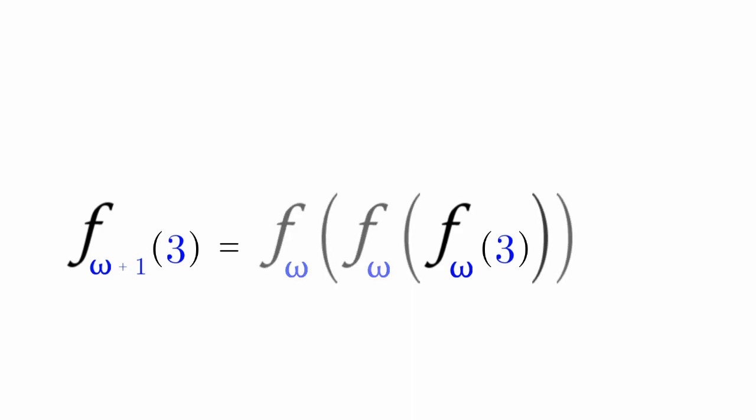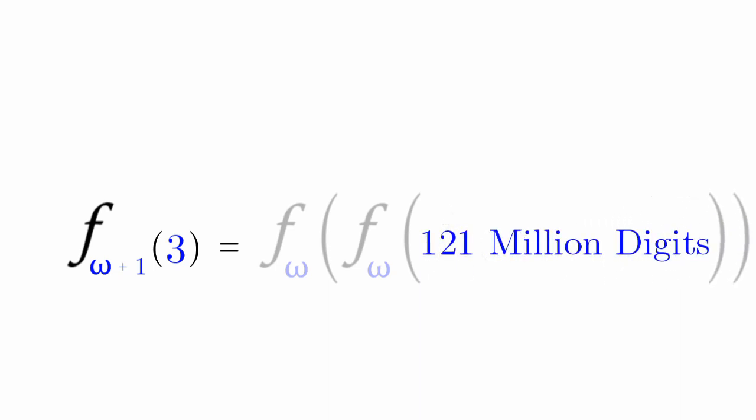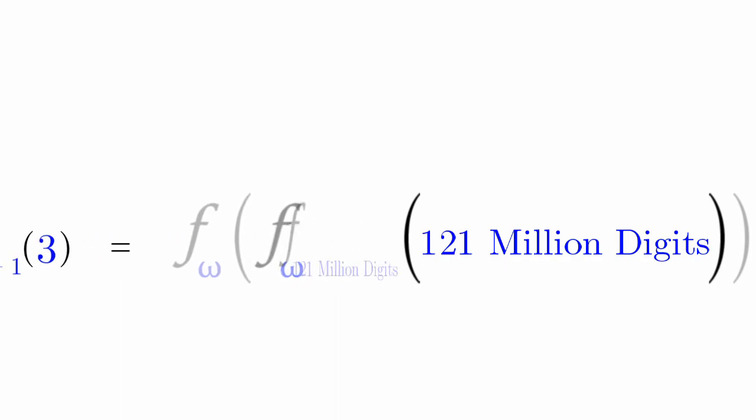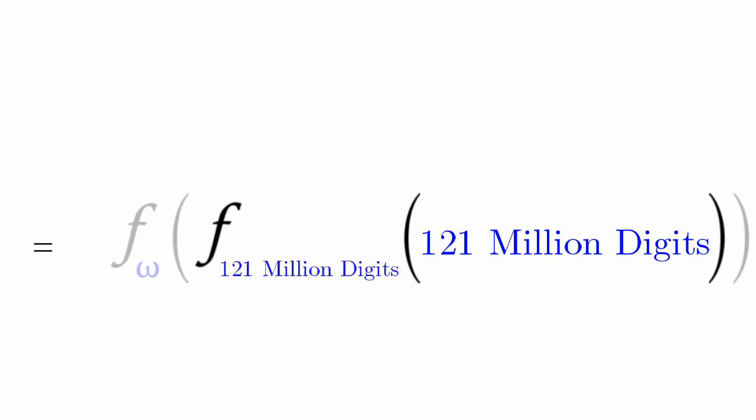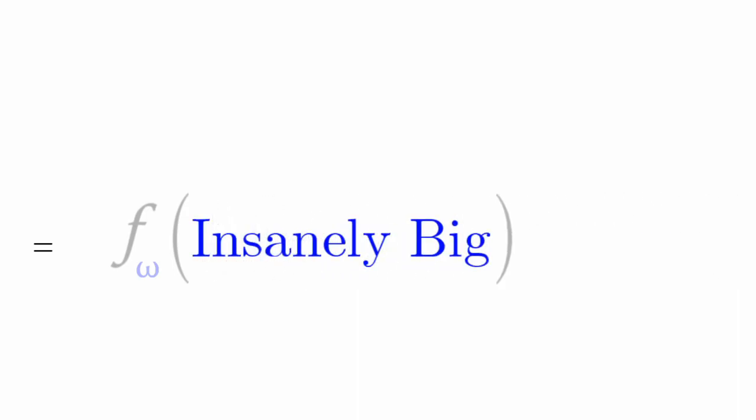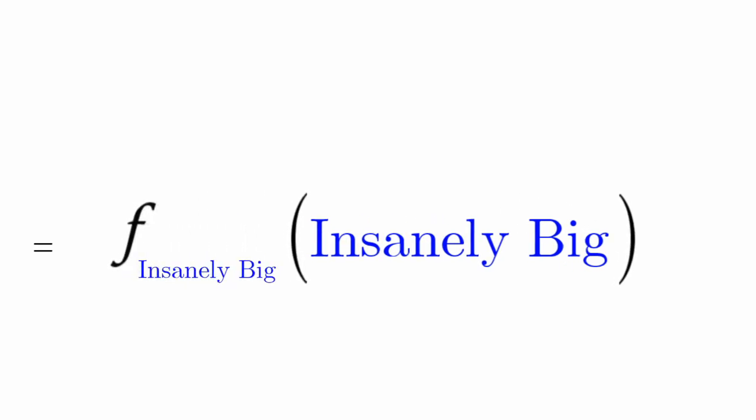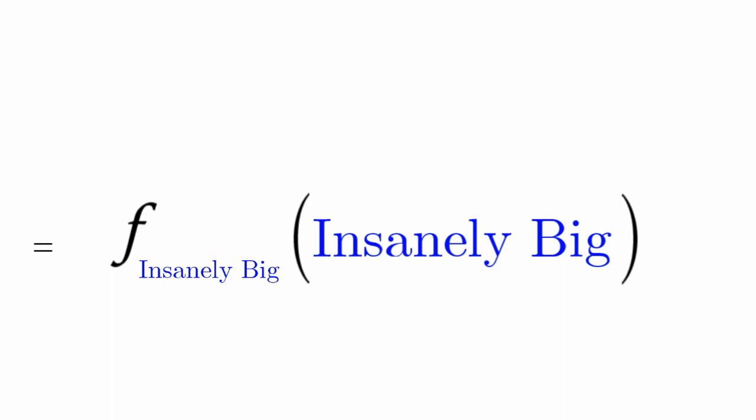f sub omega of 3, as we've known earlier, is the 121 million digit number. Now, f sub omega of the 121 million digit number, that's f sub 121 million digits of 121 million digits. This is insanely big. Now, f sub omega of insanely big, that's f sub insanely big of insanely big.